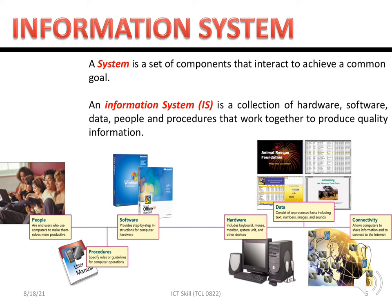Procedure is, for example, like a user manual. It helps the user to use a certain device — for example, how you can use a printer by following the user manual provided by the company. Next we discuss another part of the information system, which is people.